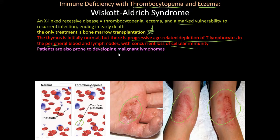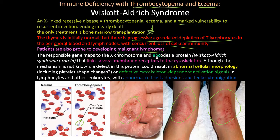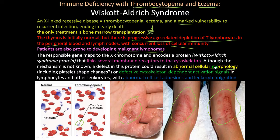Patients are also prone to malignant lymphomas. The responsible gene maps to the X chromosome and encodes a protein called Wiskott-Aldrich syndrome protein (WASP), which links several membrane receptors to the cytoskeleton. A defect in this protein may result in abnormal cellular morphology, including platelet shape changes, and defects in cytoskeleton-dependent activation signals in lymphocytes and leukocytes with abnormal cell adhesion and leukocyte migration, though the exact mechanism remains unknown.